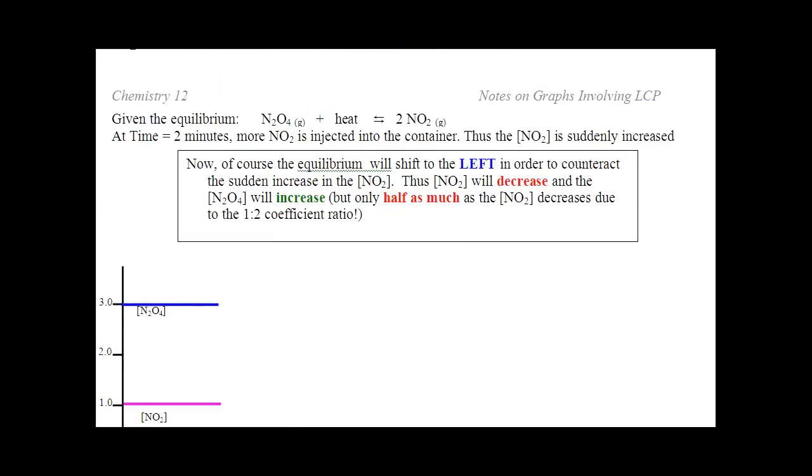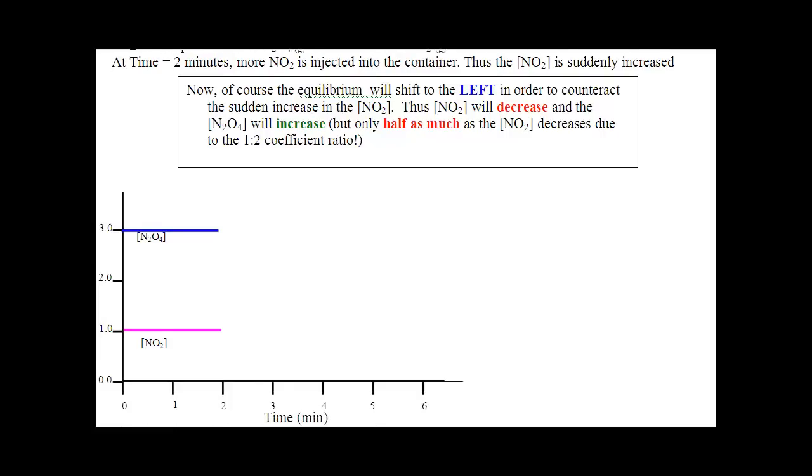So let's graph one of these. I'm using the same equilibrium, N2O4 and some heat to NO2. Again, randomly choosing 3 and 1. And it says at 2 minutes, NO2 is injected into the container. Well, if NO2 is injected into the container, it's going to shoot up by some value. I don't know what that value is, it doesn't matter. But then equilibrium is going to shift to undo my change.